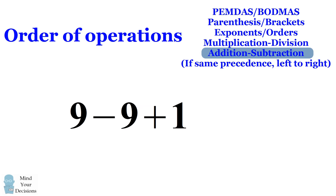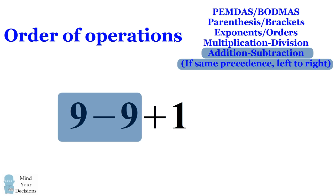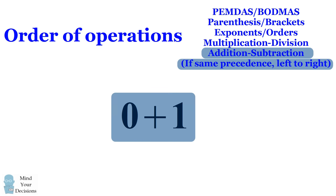Well if you have something of the same precedents, addition and subtraction, you want to evaluate the expression from left to right. So we'll first evaluate 9 minus 9 which gives us 0. Then you evaluate 0 plus 1 which gives us the correct answer of 1.